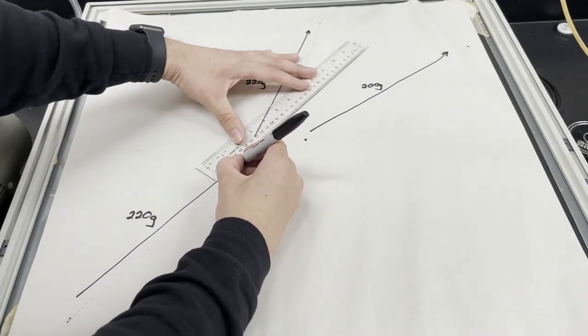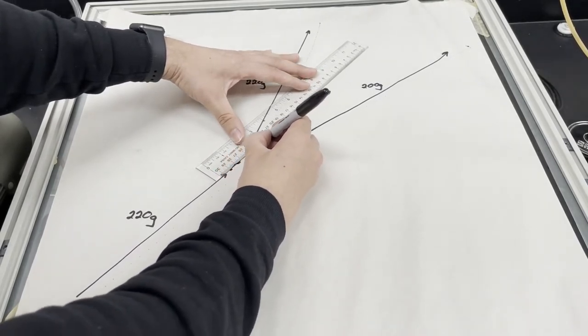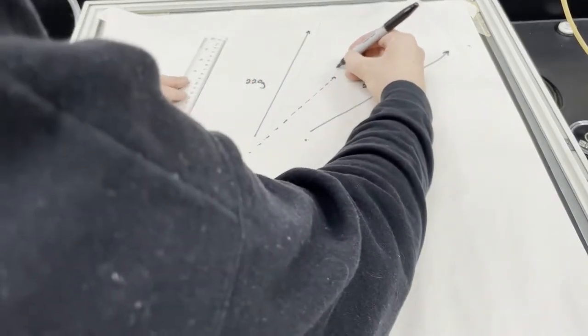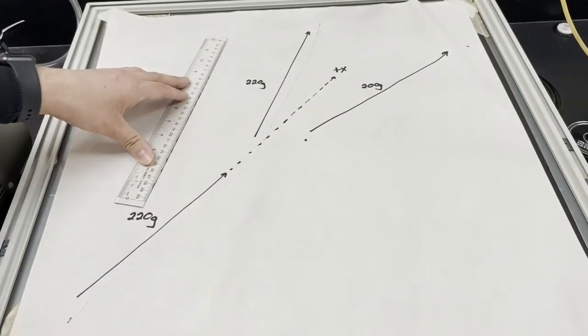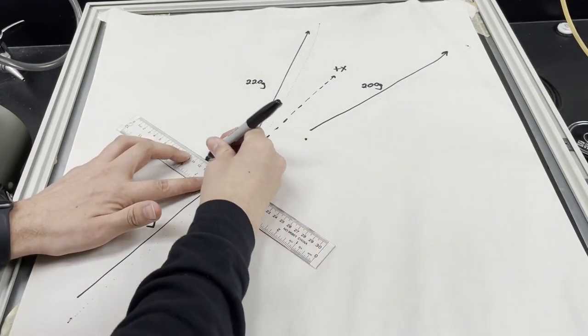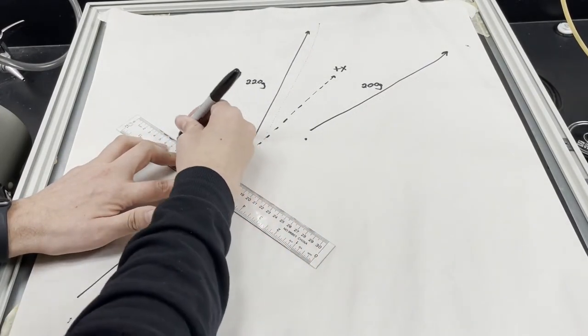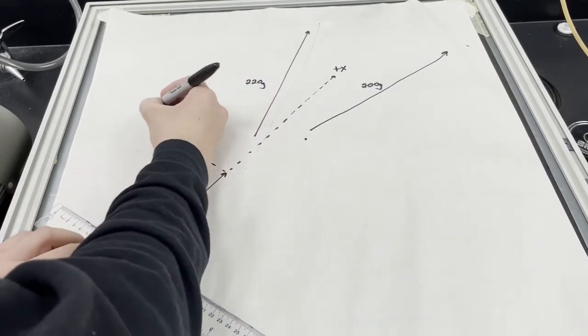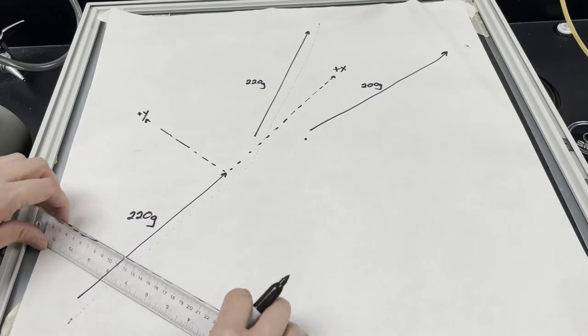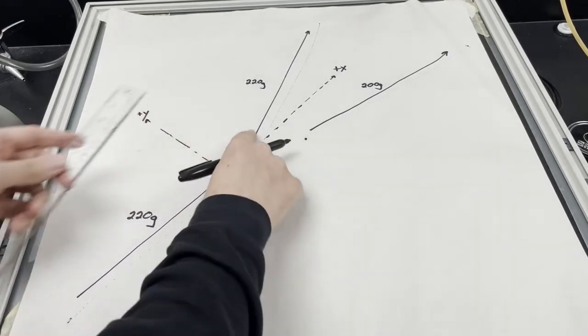Let's just choose our initial coordinate system to be perfectly in this direction. So we'll call this our positive x direction. Therefore, a line perpendicular to that would be our positive y direction, and you can figure out the angles here.